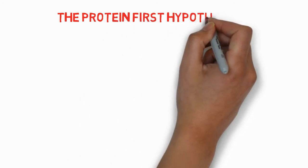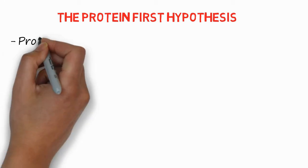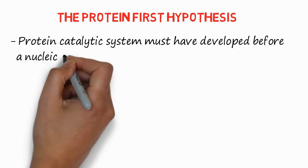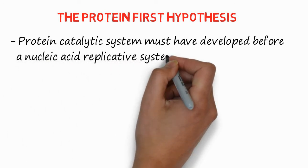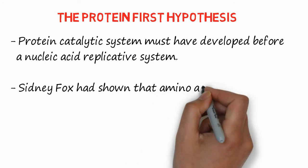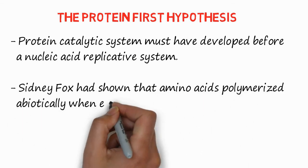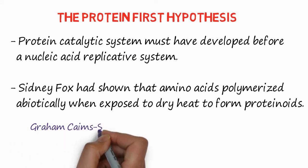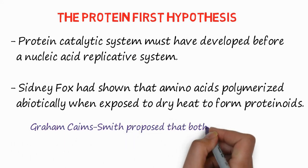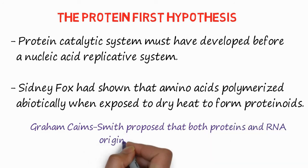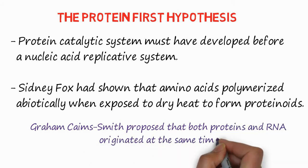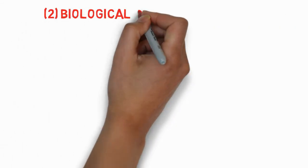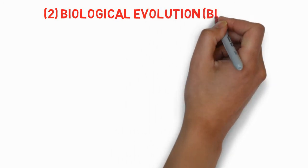The protein first hypothesis states that a protein catalytic system must have developed before a nucleic acid replicative system. For example, Sydney Fox showed that amino acids polymerized abiotically when exposed to dry heat to form proteinoids. Later on, Graham Cairns-Smith proposed that both protein and RNA originated at the same time. So all three hypotheses are available.